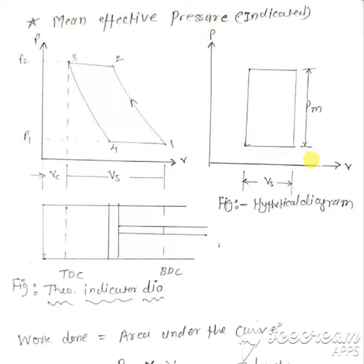Therefore, PV diagram for hypothetical indicator diagram, this portion represents 1, 2, 3, 4, 1. 1 to 2 compression, 2 to 3 delivery, 3 to 4 expansion, and 4 to 1 suction.